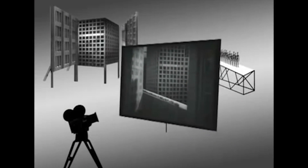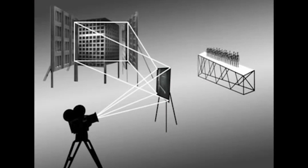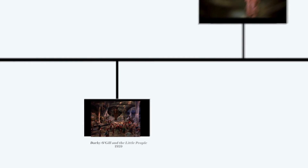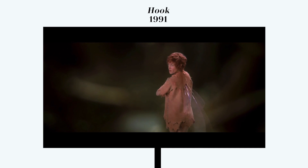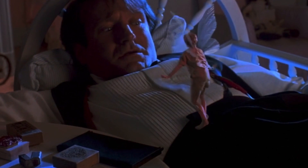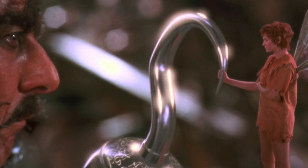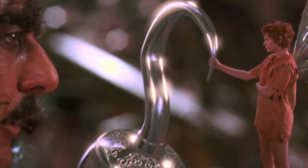It wasn't really until the advent of digital technology that new techniques started to be utilized. Hook, in 1991, used some of the similar techniques — composites and blue screen — in order to create the miniature look of Tinker Bell. Tinker Bell was also combined with photographic elements for her wings that were actual miniatures, photographed separately and then composited with her.